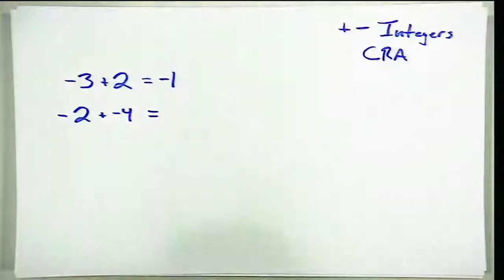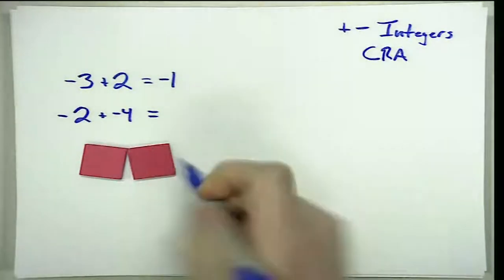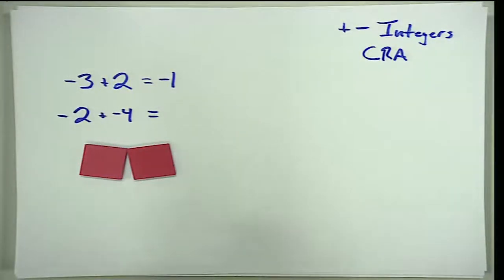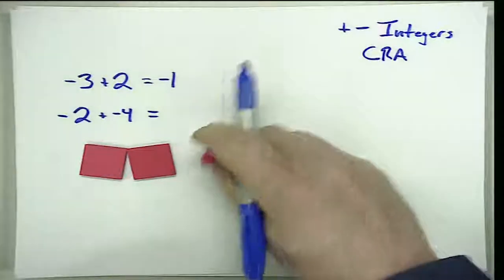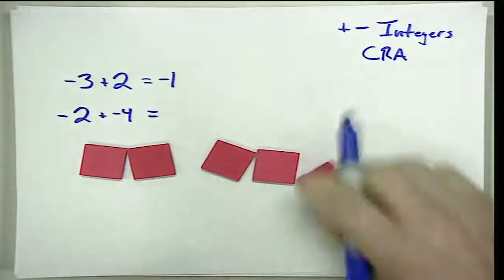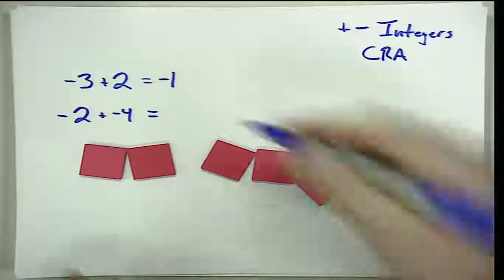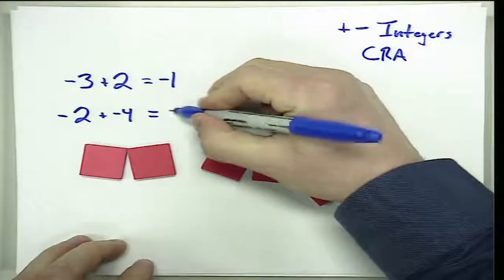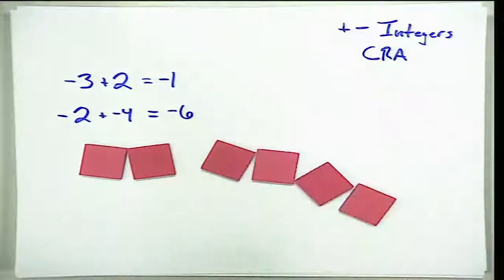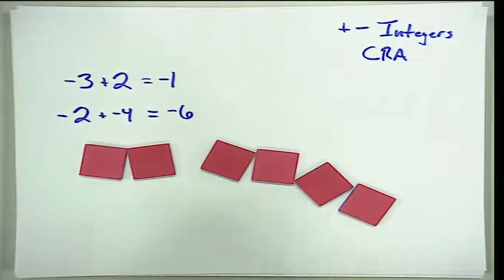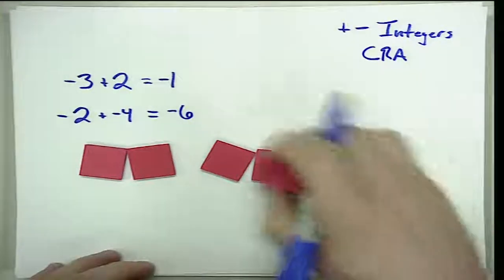In a similar problem, if we had negative 2 plus negative 4, the way we would model that is 2 negatives — this is an addition problem, so I'm going to add to that 4 negatives. There are no zero pairs that cancel out, and so this leaves me with 6 negatives, or a value of negative 6.